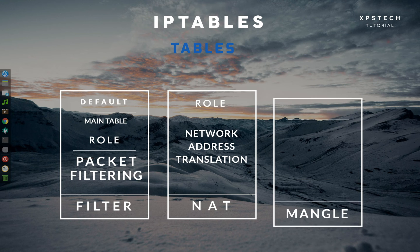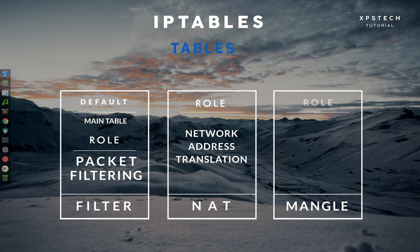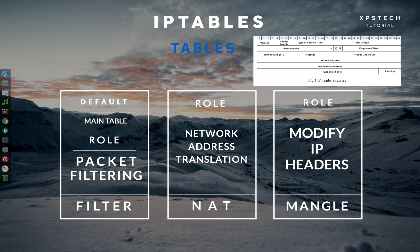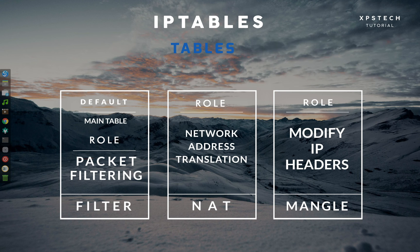Third is the Mangle table. This table is used to alter the IP headers of the packet. For instance, you can adjust the Time to Live (TTL) value of a packet, either lengthening or shortening the number of valid network hops the packet can sustain. Other IP headers can be altered in similar ways.